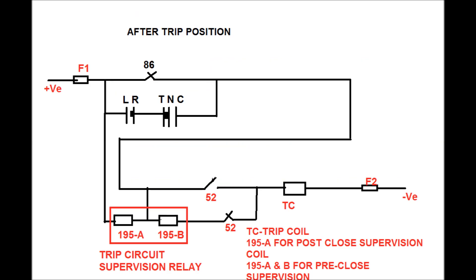In this figure the after trip position of the circuit breaker is shown. Actually there are two trip coils. This trip circuit has been shown for trip circuit 1. Similarly there is another trip circuit which is not shown in this figure. Ok. Thank you.